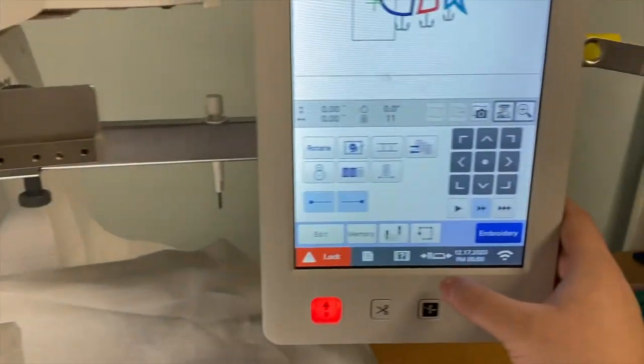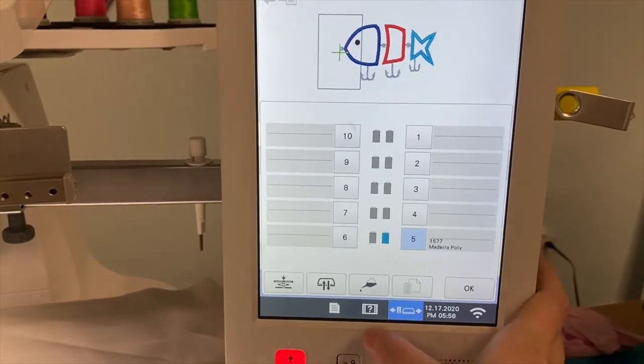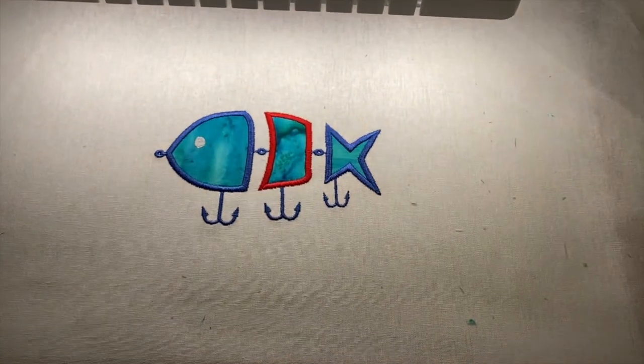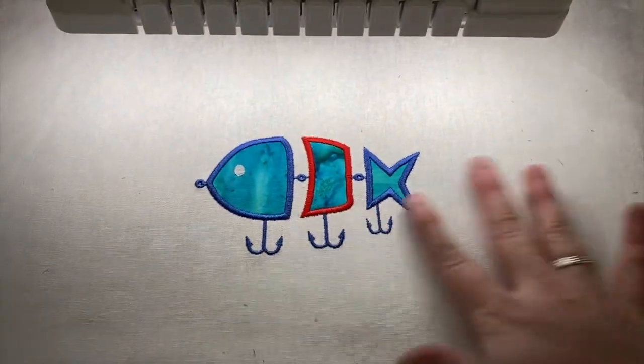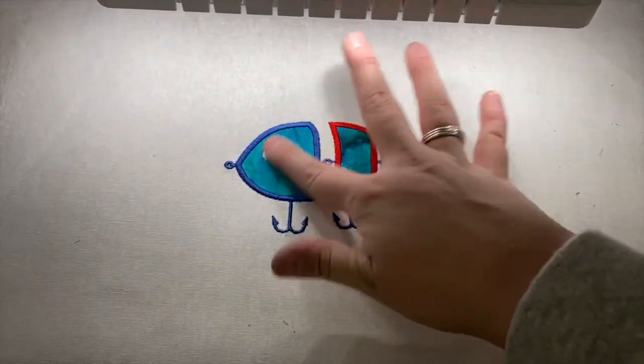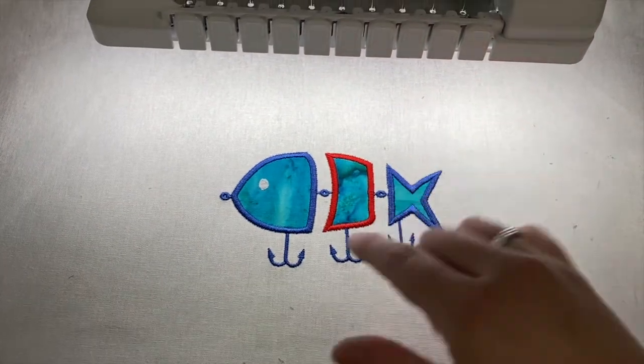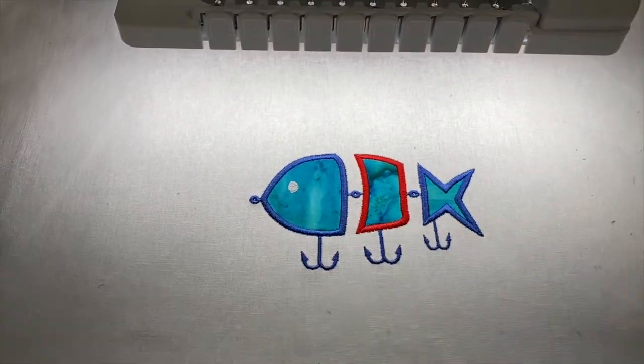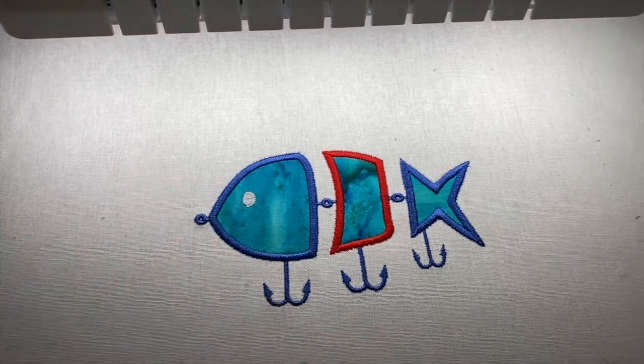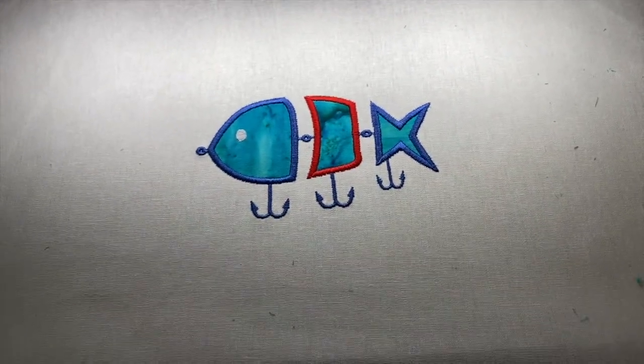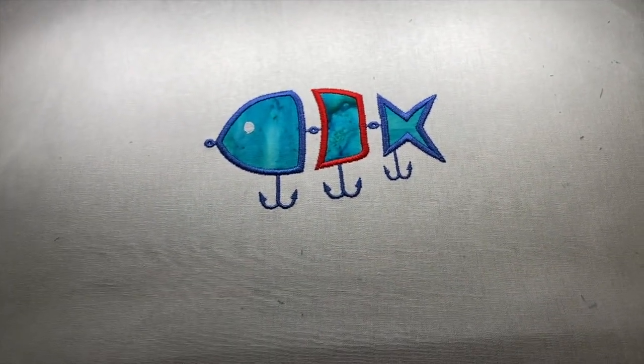But yeah, let me kick it out real quick. Look how gorgeous that applique is. Your fabric isn't coming up. I know I said I was going to do the eye in brown, but it turns out I did white because I figured the brown wouldn't show up.